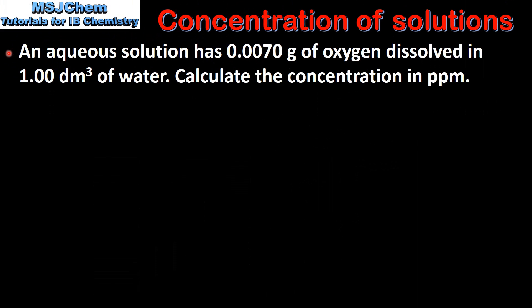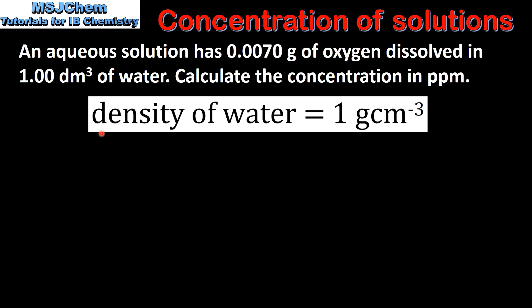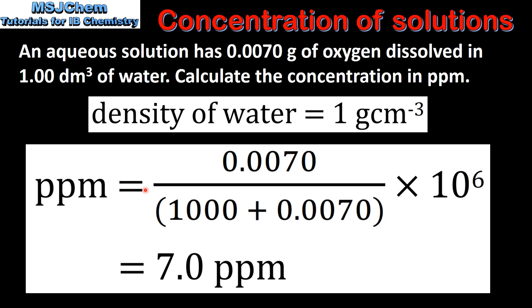In our final example we'll calculate the concentration in parts per million. An aqueous solution has 0.0070 grams of oxygen dissolved in 1 decimeter cubed of water. Calculate the concentration in parts per million. The density of water is 1 gram per centimeter cubed, meaning 1 decimeter cubed, which equals 1000 centimeters cubed, has a mass of 1000 grams. To calculate parts per million we divide the mass of oxygen by the mass of the solution — the mass of the water (1000 grams) plus the mass of the oxygen — then multiply by 10 to the 6, which gives us 7.0 parts per million.